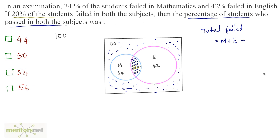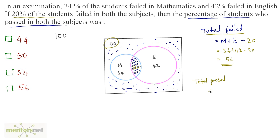So total failed equals M plus E minus 20, which is 34 plus 42 minus 20 equals 56 students. The students who passed in both subjects equals the complete number of students, 100, minus the total failed, 56. So it is equal to 44. Our answer is option A.